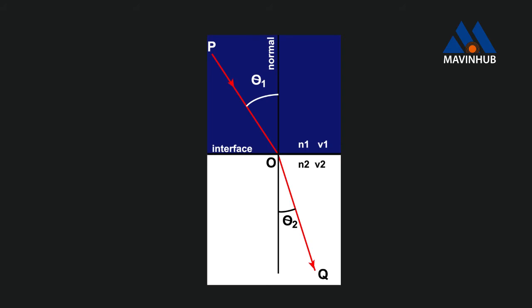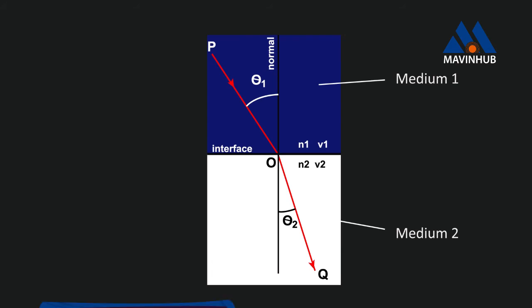Consider this picture. Here, we see that light is travelling from medium 1 to medium 2. Medium 1 has a refractive index N1, with a speed of light in the medium as V1. Medium 2 has a refractive index N2, with a speed of light in the medium as V2. We see that the incident ray PO does not travel in a straight line — it refracts to form OQ. The incident angle is theta 1 and the refracted angle is theta 2. Snell's law is expressed mathematically as follows.